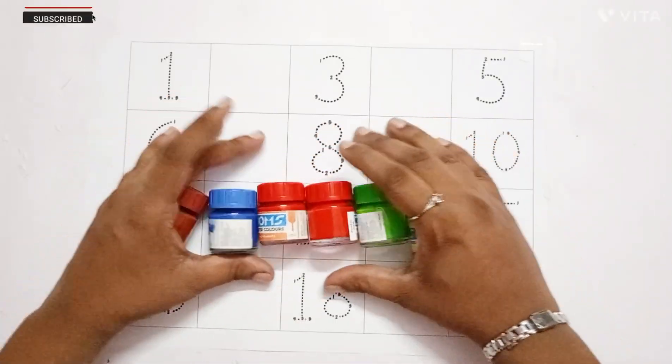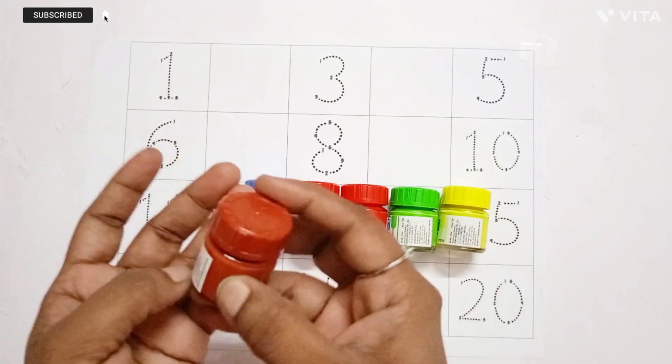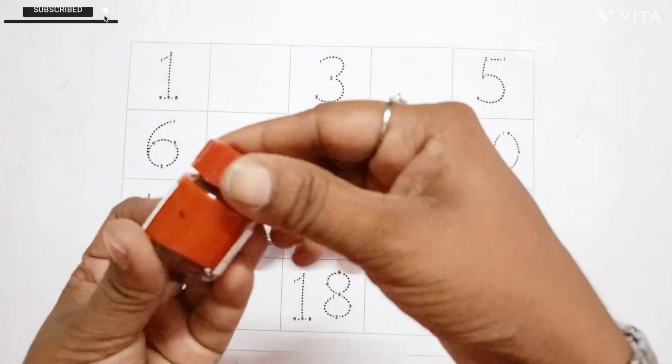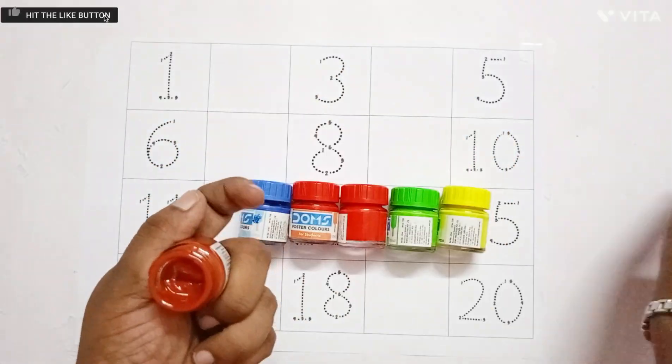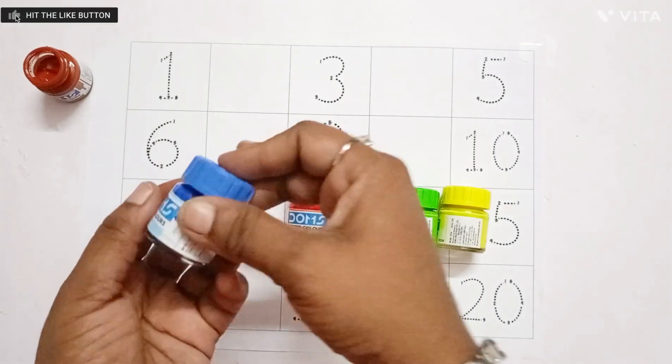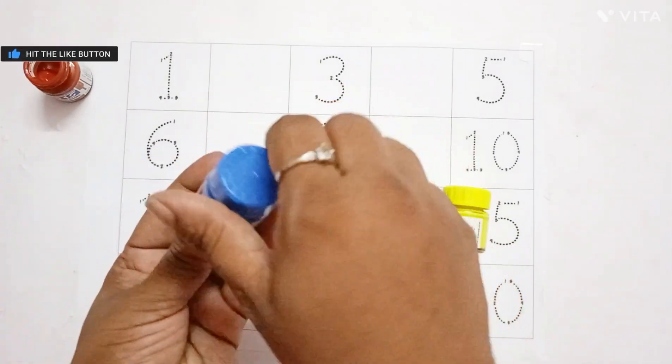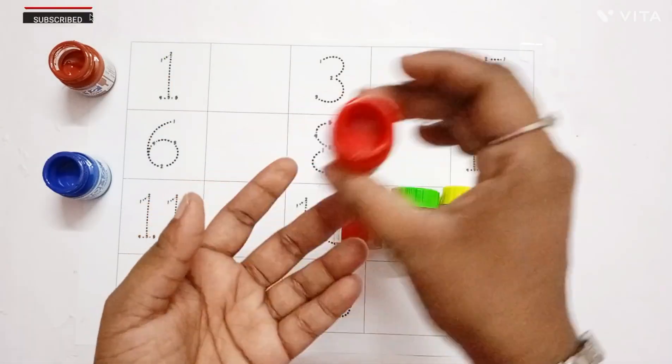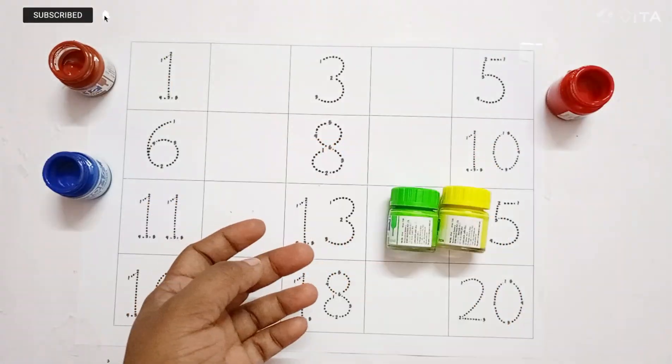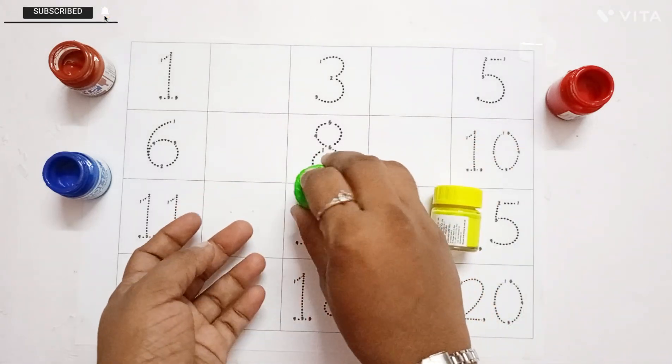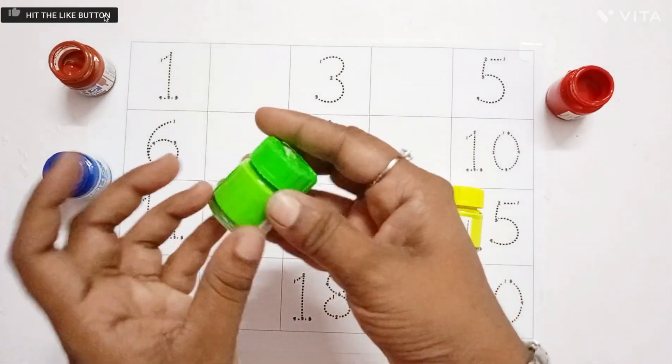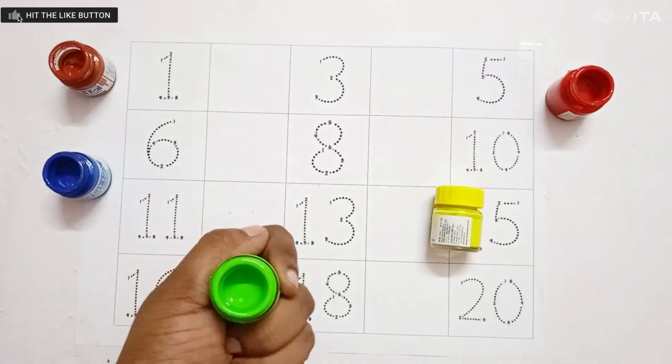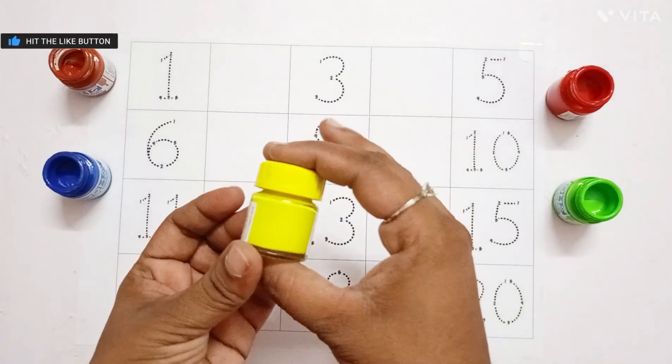Let's learn some colors. Brown color. Blue color. Red color. Green color. And yellow color.